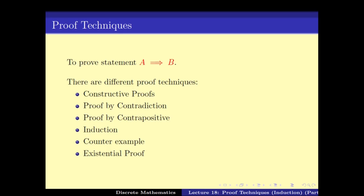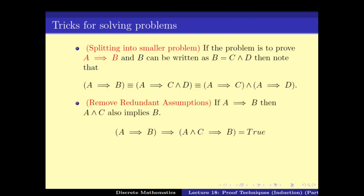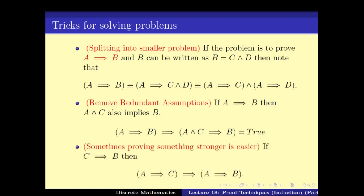We started our whole study of proof techniques by looking at how to split a problem into smaller parts, which took us the help of propositional logic to prove that for certain cases splitting up the problem into smaller parts is possible. One such case is when you have to prove A implies B and B is written as C and D — in that case we can split up the problem into two smaller parts. Similarly, removing redundant assumptions can give a simpler statement that is easier to prove. We also looked at examples where proving something stronger is easier.